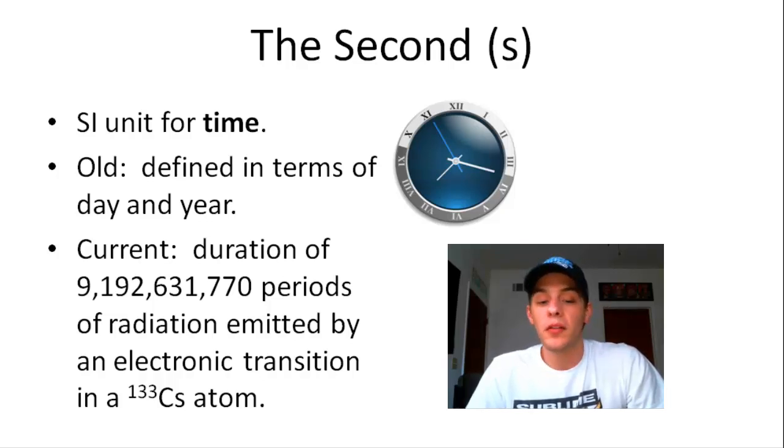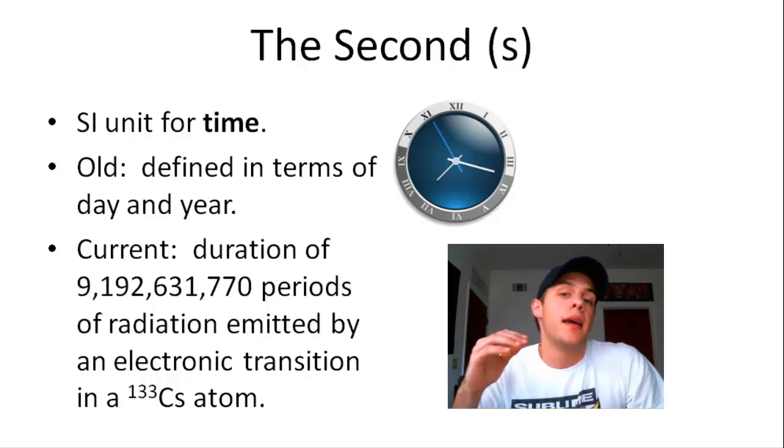what does all that mean? Well, starting with electronic transitions, when we get into the, excuse me, the quantum mechanical model of the atom, we will start seeing that electrons that are within atoms can change their energy levels. And when an electron goes from a high energy level to a lower energy level, this is accompanied by an emission of radiation.